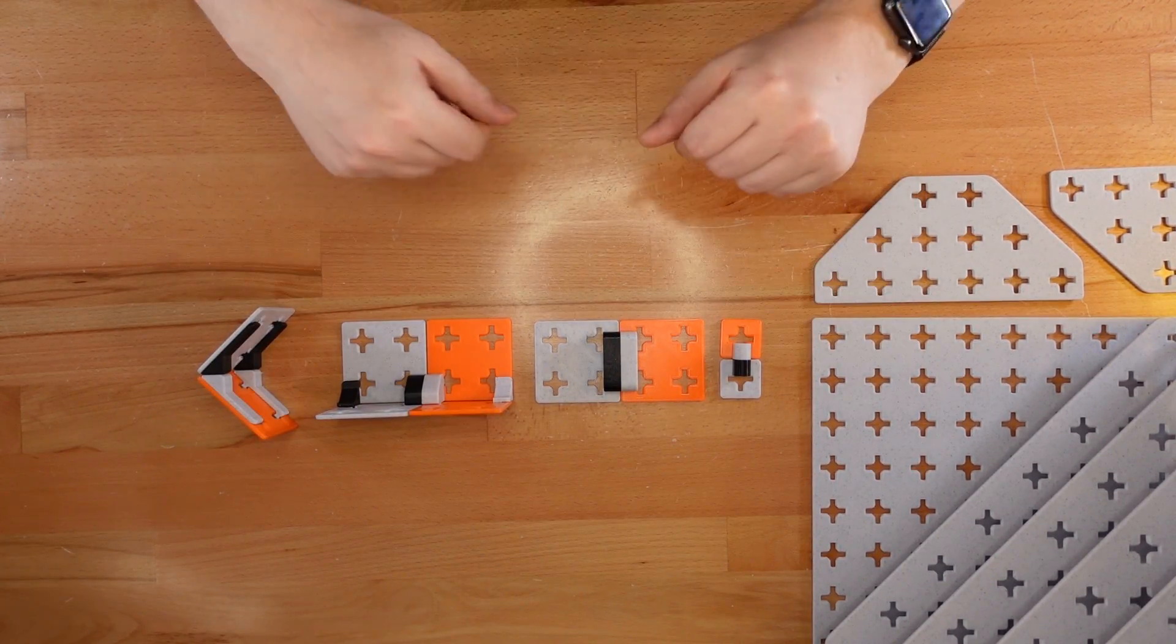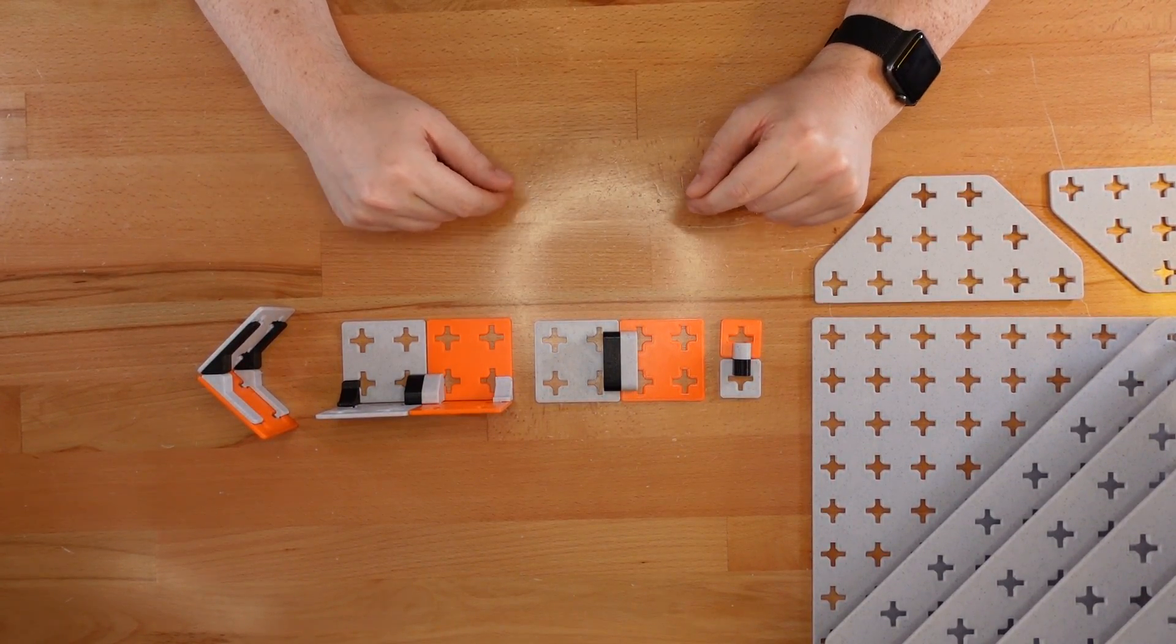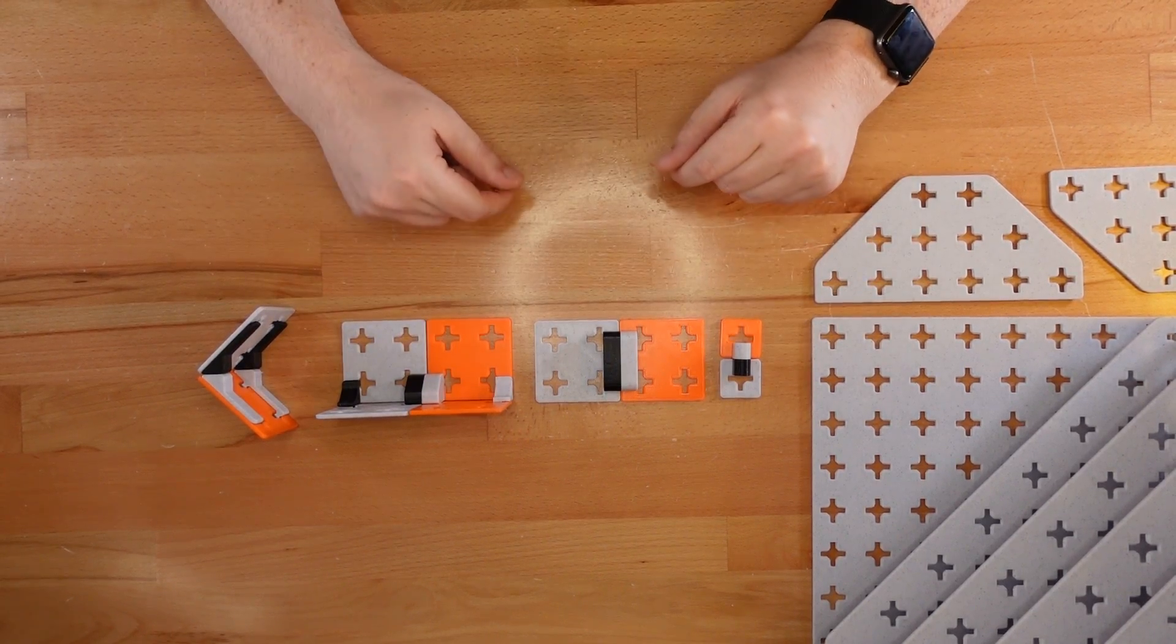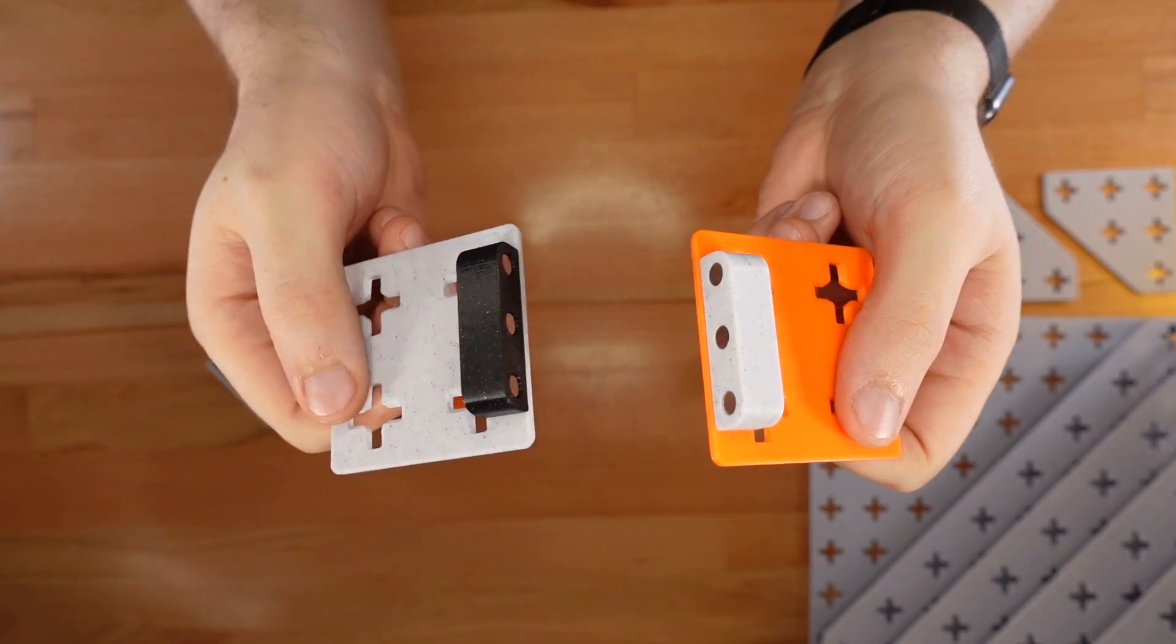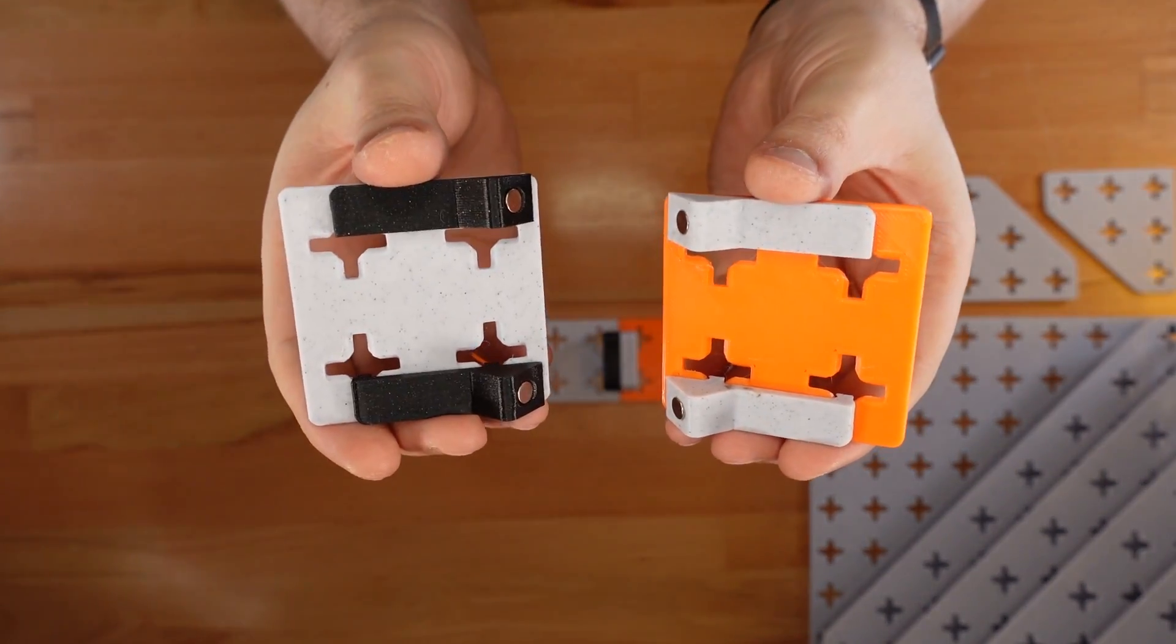These are magnetic connectors. You can use them to attach panels to metal surfaces or to each other. The connectors are available in small, wide, corner, and latched layouts.